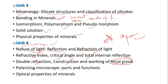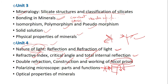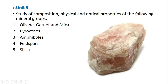These are topics from physics — if you had physics in 11th and 12th you'll have some familiarity, but if you've forgotten we'll cover them from basics. Then we have the polarizing microscope — the practical application of polarization, its parts and functions. Lastly, optical properties of minerals. With this we come to an end of unit four.